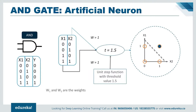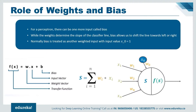A linear perceptron can be used to classify the input dataset into two classes. Mathematically, one can represent a perceptron as a function of weights, inputs, and bias. Each input received by the perceptron is weighted based on its contribution to the final output. Bias allows us to shift the decision line so that it can best separate the inputs into two classes. Now let us look into the example of the perceptron learning algorithm, where I'll implement the AND gate using a perceptron from scratch.